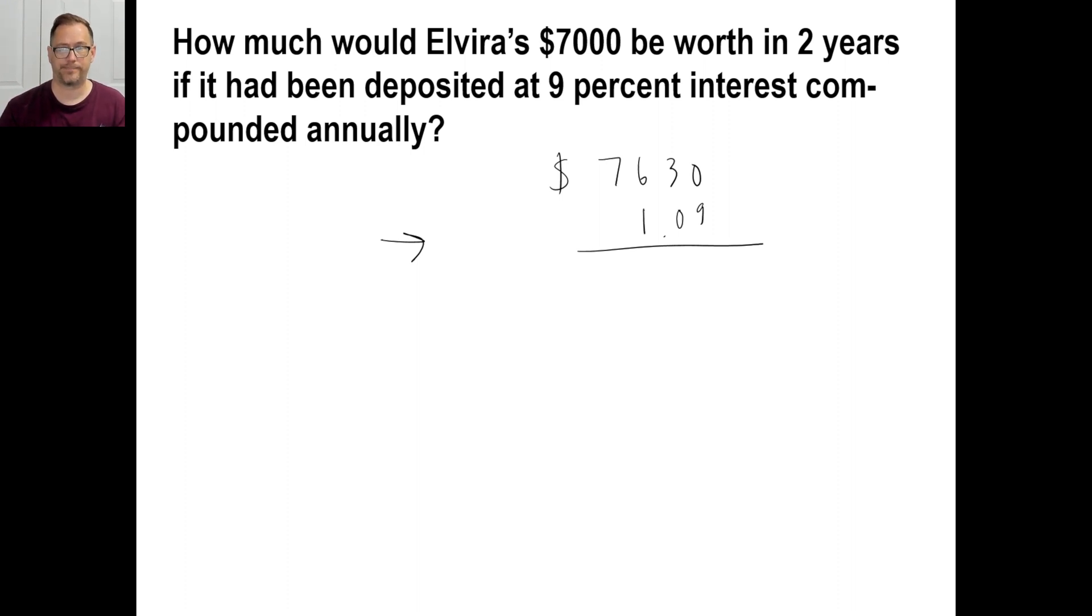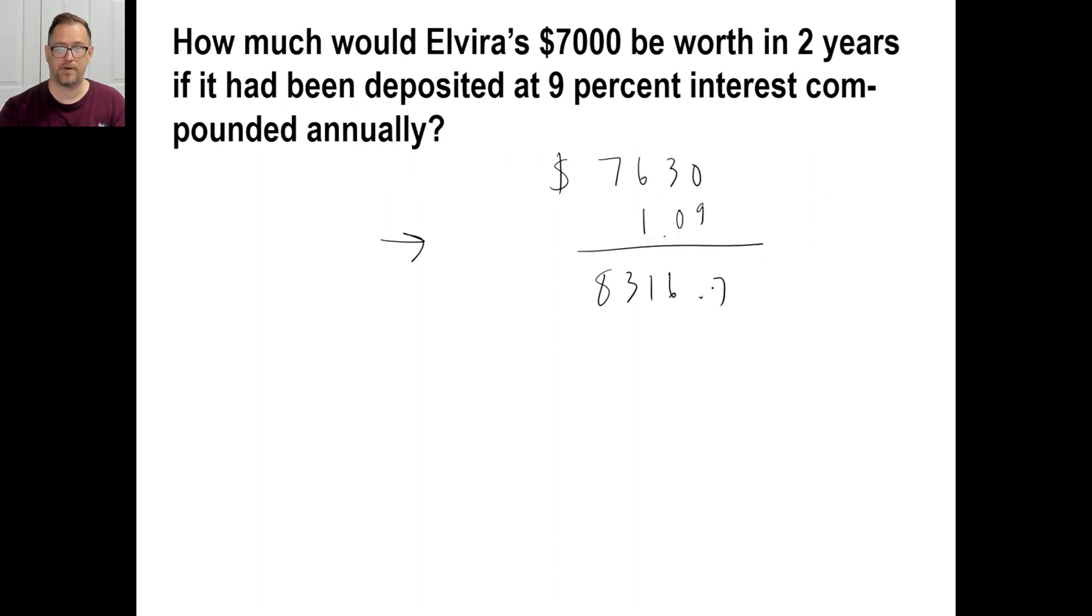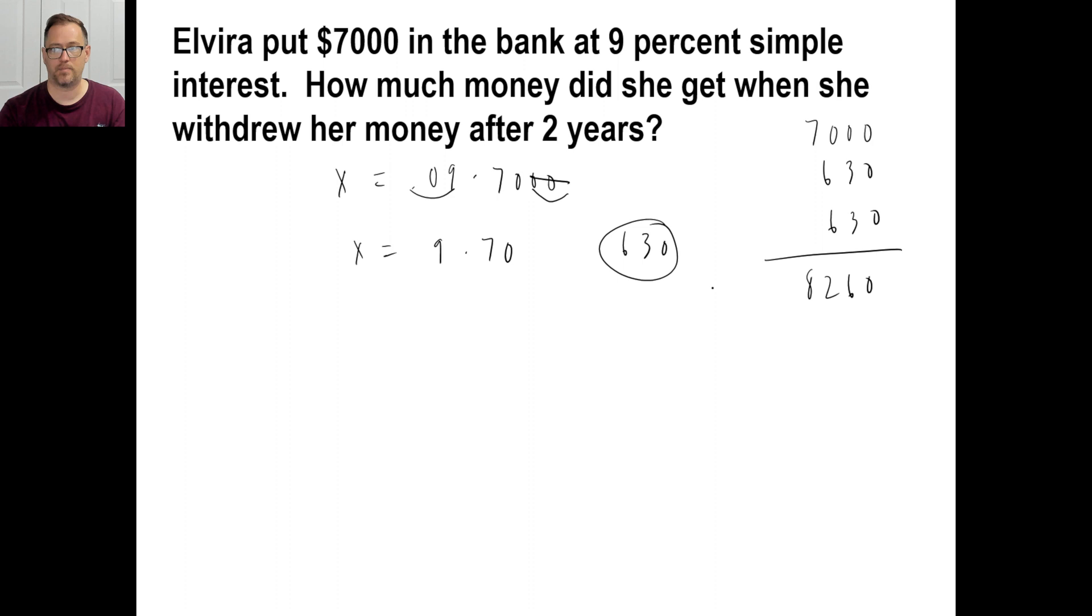Hey, Siri, what's 7,630 times 1.09? 7,630 times 1.09 is 8,316.7. Okay. Now look at this. This is after two years of compounded interest. This is after two years of just simple interest. We could probably do this giant study where after 10 years, this number here would be way more than that number. If you just kept doing it each year at $630 an interest.